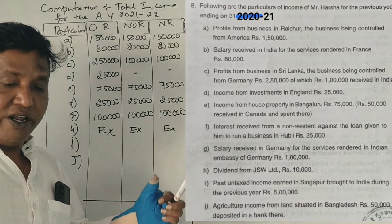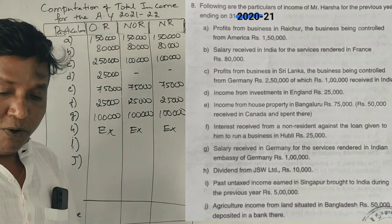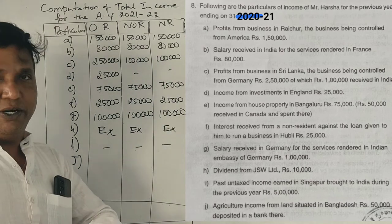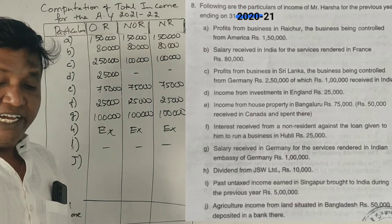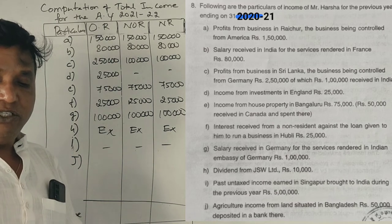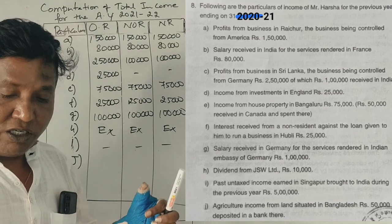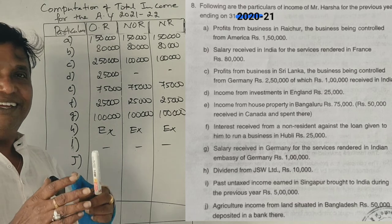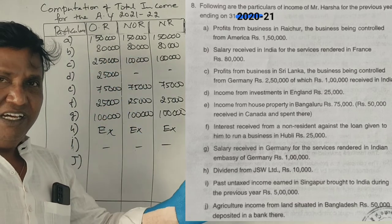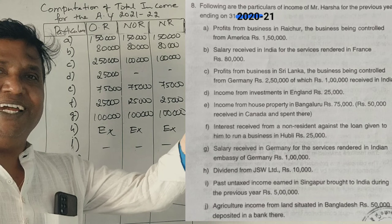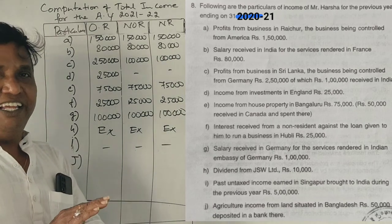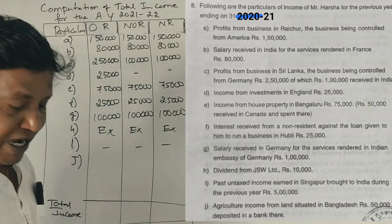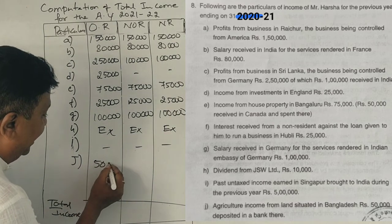Past untaxed foreign income in Singapore brought to India during the previous year — this is a dash (not taxable). Next point: agricultural income from land situated in Bangladesh — 50,000 rupees, deposited in a bank there. Agricultural income earned and deposited in a Bangladesh bank. If the person is an ordinary resident in India, this is taxable.